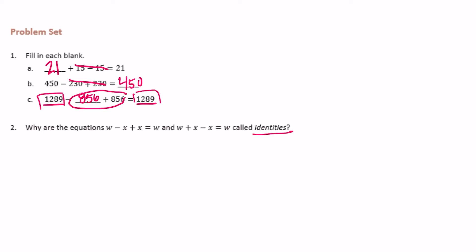So why are these called identities? That's because when we subtract something and then add the same thing back in, we are going to get the same number. We return to the original value whether it's 21 and 21 or 450 and 450 or 1,289 and 1,289. Same thing.